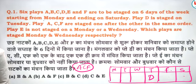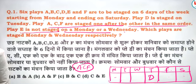So ACF can happen on Friday, Saturday, Monday. A, C and F stay one after the other in the same order. Play E does not stay on Monday or Wednesday — so E is not on Monday or Wednesday. If ACF is together, then E can be placed here on Sunday. So E goes here.